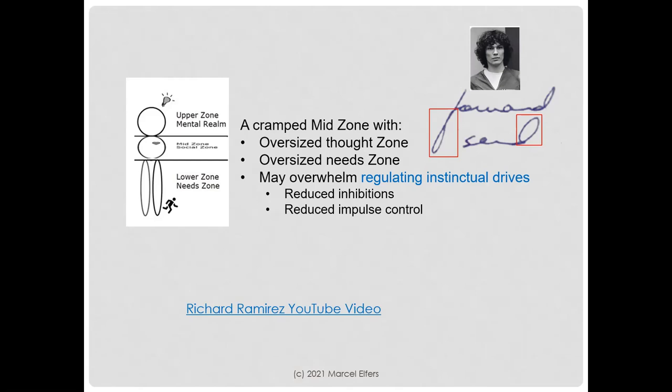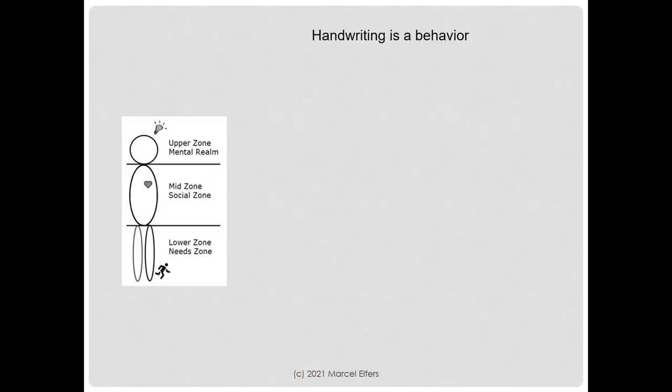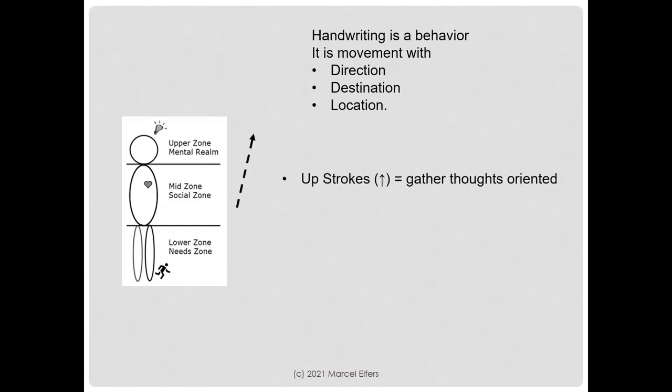Click the link for the Richard Ramirez YouTube video if you feel like it. Handwriting is a behavior — it is a movement with direction, destination, and a location. Upstrokes move towards our head, our brain, where our ideas, ideation, and moral compass resides. It's the mental realm. Upstrokes gather thoughts.